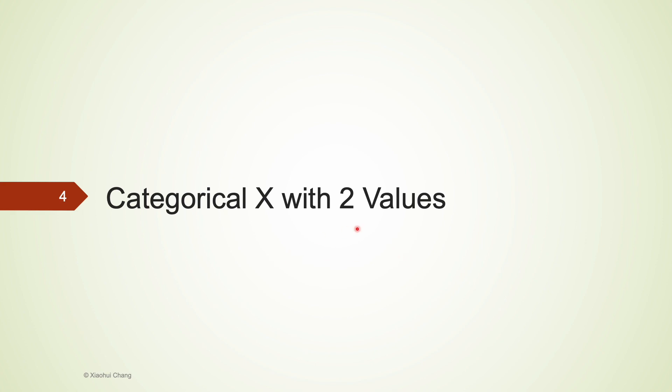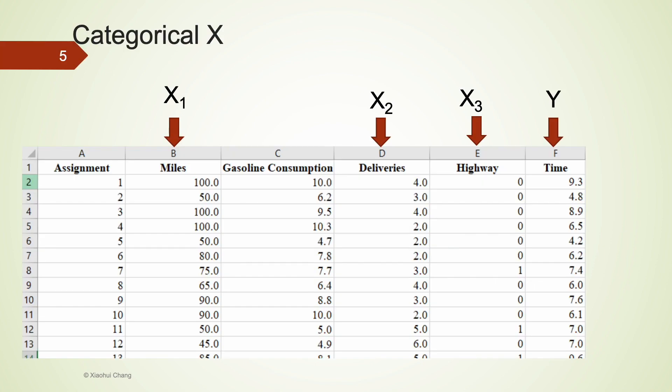Let's focus on the binary independent variables first. That's the categorical x with two values. This is the same trucking example that we analyzed earlier. I'm going to use the time as my response variable or dependent variable. Other than miles and deliveries, I will also consider highway as my independent variable. The highway variable is a binary variable as it only takes values 1 or 0. 1 represents the driving assignment involves a highway, while 0 represents the driving assignment does not include highway.